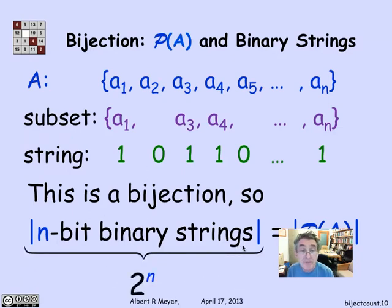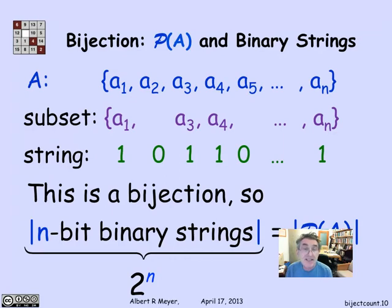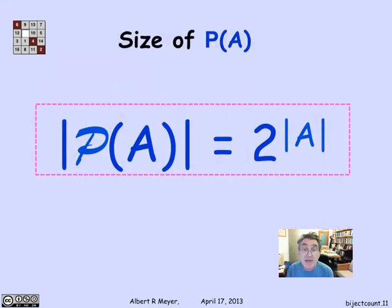We know how to count the number of n-bit strings, it's 2 to the n. So what we just figured out is, if I have a set of size n, it's got 2 to the n subsets. A slick way to say that without mentioning n is that the size of the power set of A is simply 2 to the size of A.